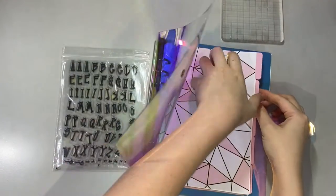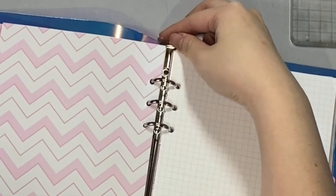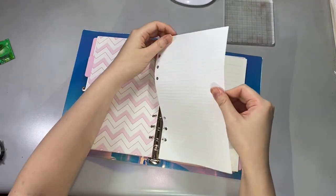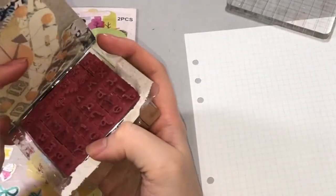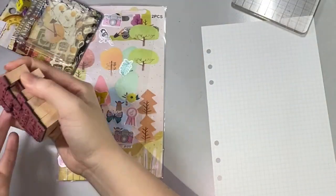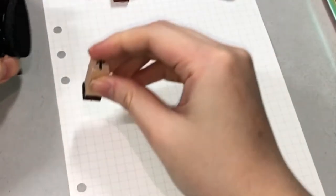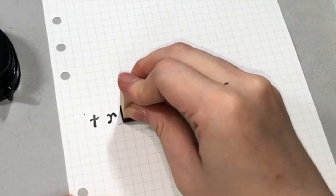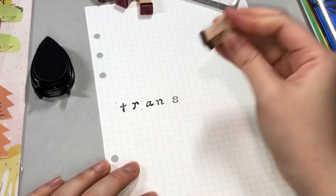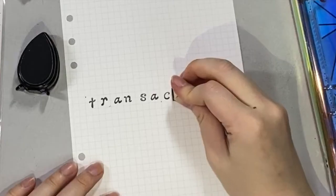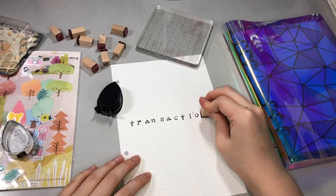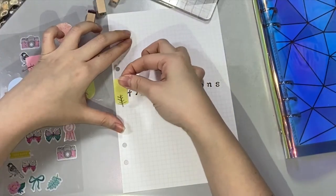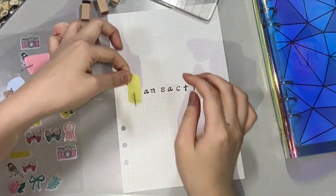The next section would be the transactions section. In this section I'll be putting all the transactions I have for the month, so all the things that I bought for the business, all the things that I sold for the business. I'll list them down daily and then summarize everything on a monthly basis. I'm stamping in the letters here to spell out the transaction, and putting in some stickers of trees and probably butterfly, because we're hoping that money will grow on trees.